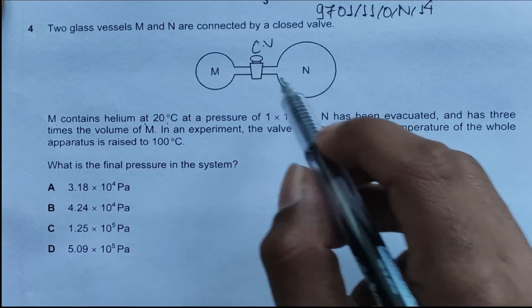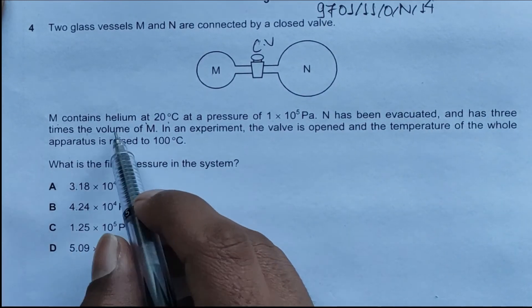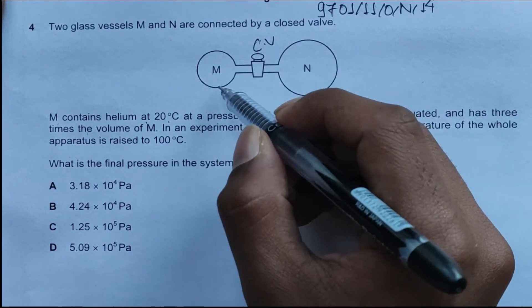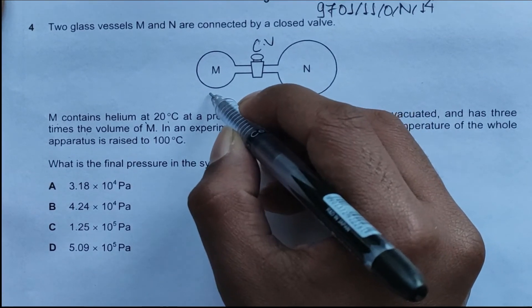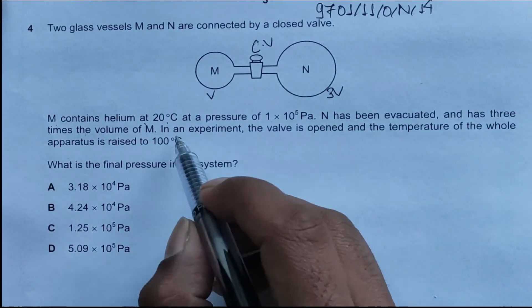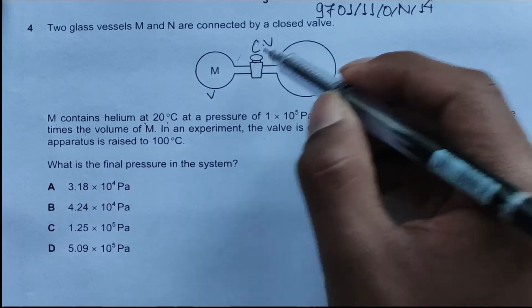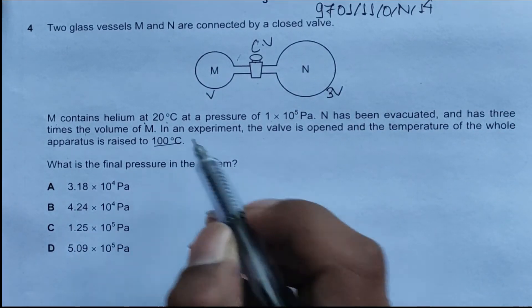This can be regarded as room temperature and pressure. N has been evacuated, so we don't have anything at N right now. N has three times the volume of M, so if volume of M is V, the volume of N is 3V. In an experiment, the valve is opened and the temperature of the whole apparatus is raised to 100 degrees Celsius.